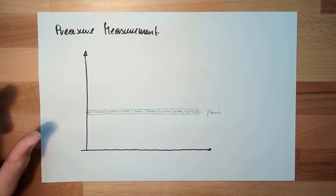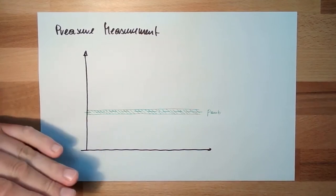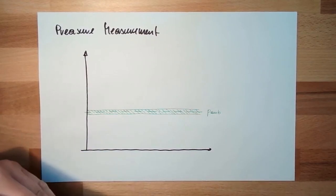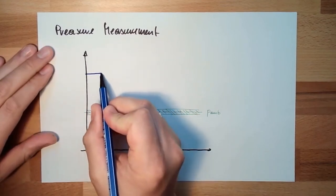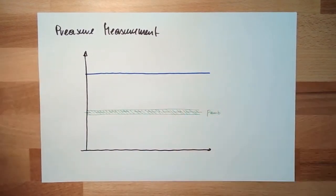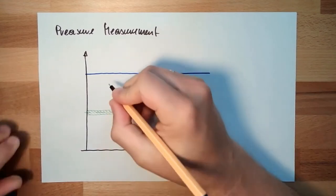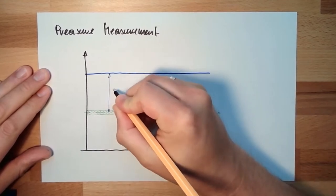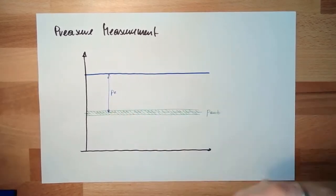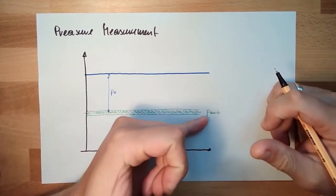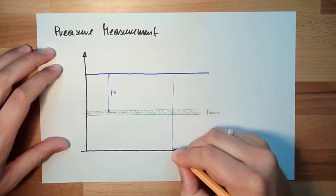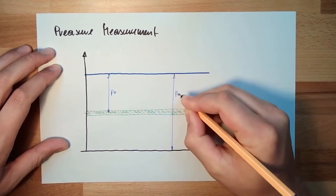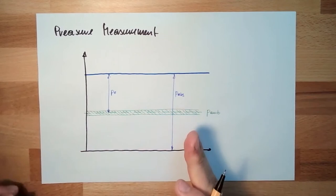If we say we measure the pressure, then this is usually the excessive pressure — so overpressure or something like this. So if we have a certain pressure, then we can distinguish between this PE, the excessive pressure additional to the ambient pressure, or we can measure the absolute pressure. These two things we have to distinguish.